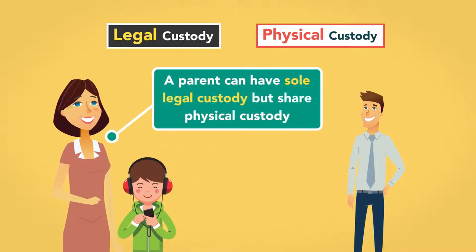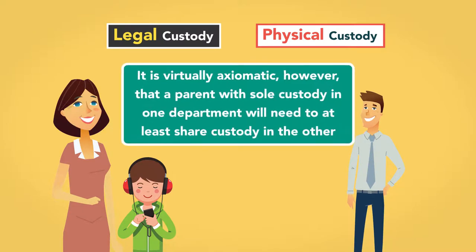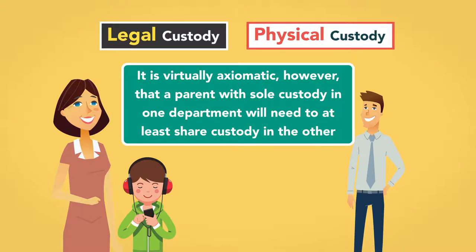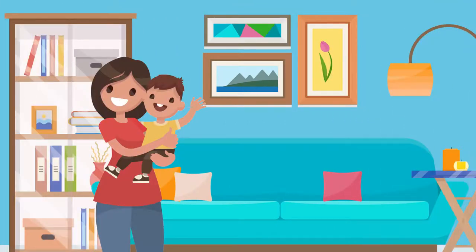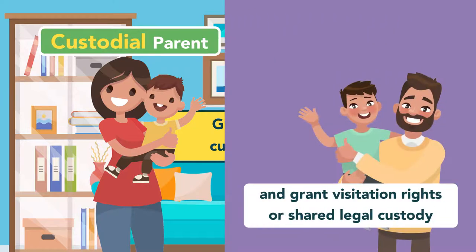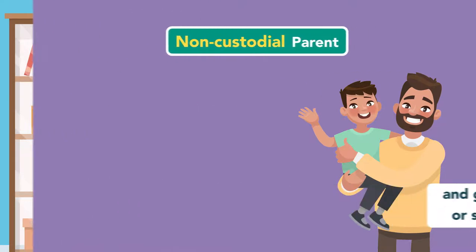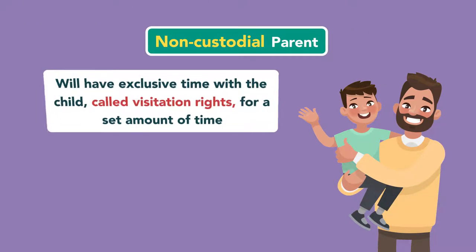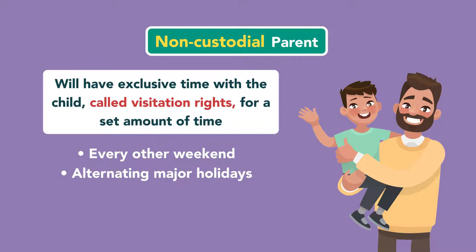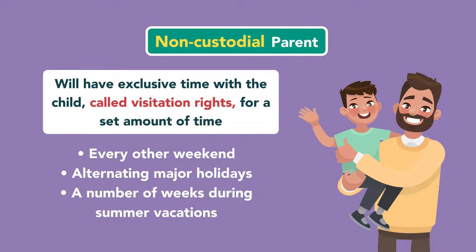For example, a parent can have sole legal custody but share physical custody. It is virtually axiomatic that a parent with sole custody in one department will need to at least share custody in the other. Most modern custody arrangements give primary physical custody to one parent, referred to as the custodial parent, and grant visitation rights or shared legal custody to the non-custodial parent for a set amount of time, such as every other weekend, alternating major holidays, and a number of weeks during summer vacations.